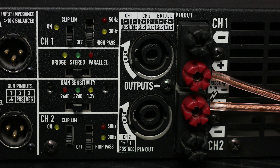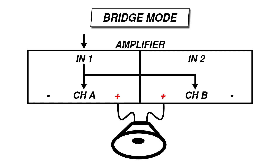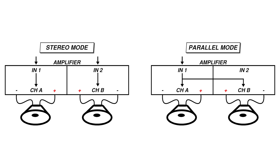However, in bridge mono mode, you'll usually connect a speaker between the positive terminals of the two amplifier channels. This isn't always the case, so please make sure you read the user manual for your amplifier before making any connections. Because the speaker is wired between the two positive terminals, one of those terminals needs to act sort of like the negative terminal.